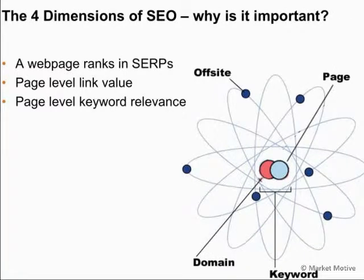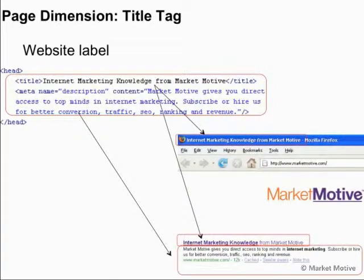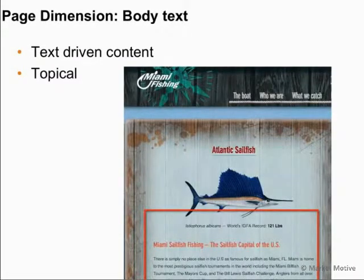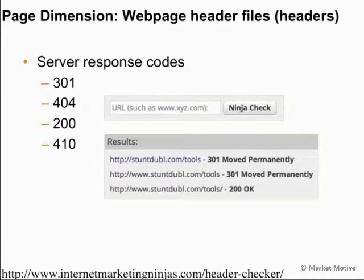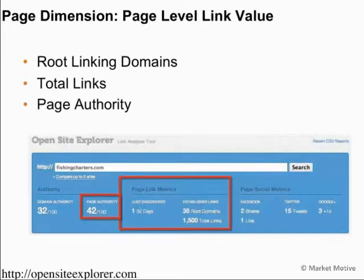Why is the page dimension important? It's the web page that ranks in those search results. It's the title tag that's going to come up when you do that search. The page needs links inbound to it and keyword relevance in order to achieve and maintain high search results. A few of the factors from this dimension include the title tag, the body text, making sure it's topical and about the content the user wants to read so they don't click back to the search results. This also includes the web page header files — the initial response codes sent to the browser when a user types in a URL.